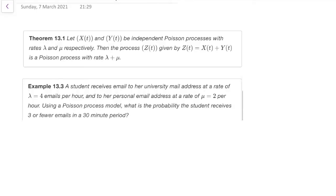So let's start with summing Poisson processes. Here we've got Theorem 13.1, which tells us everything we need to know about this. It says if X(t) and Y(t) are independent Poisson processes with rate lambda and mu, then Z(t), the Poisson process you get from adding together X and Y, is a Poisson process with rate lambda plus mu. So if you add together two independent Poisson processes, you get a Poisson process whose rate is the sum of the rates.